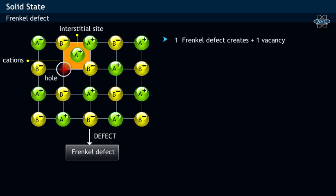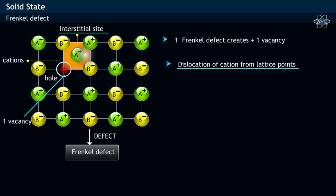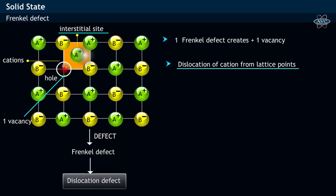One Frenkel defect creates one vacancy and one interstitial defect, caused due to occupation of the cation in the interstitial site. Since the defect is caused by dislocation of the cation from its lattice point, Frenkel defect is also called a dislocation defect.